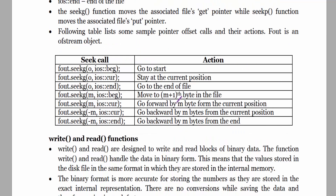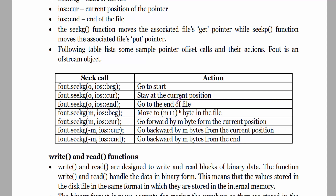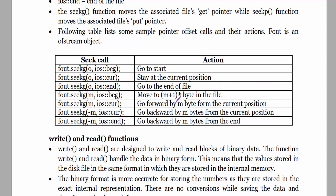For example, fout.seekg(0, ios::beginning) means go to the start of the file. seekg(0, ios::cur) means stay at the current position — offset is 0, so no forward or backward movement. seekg with ios::end means go to the end of the file.